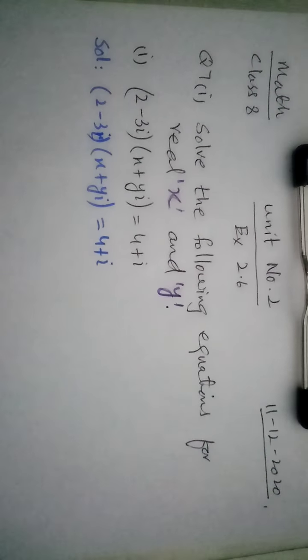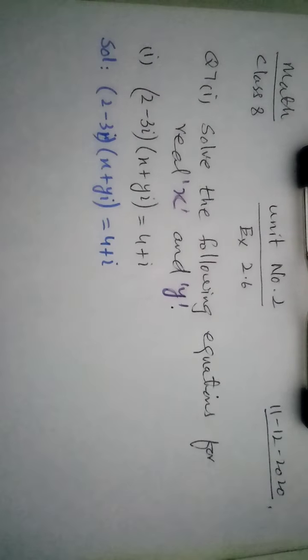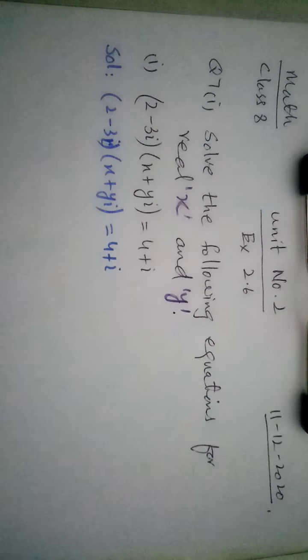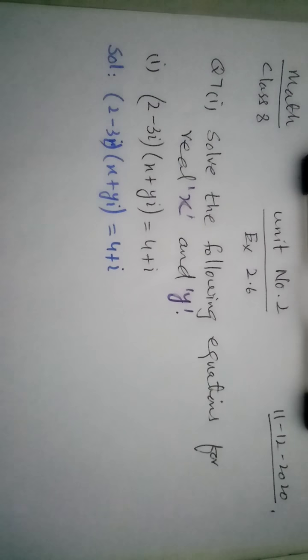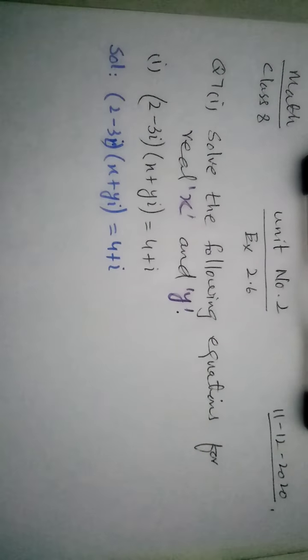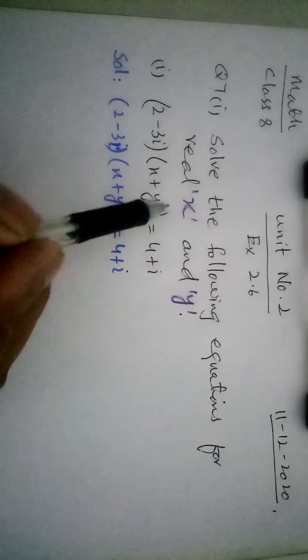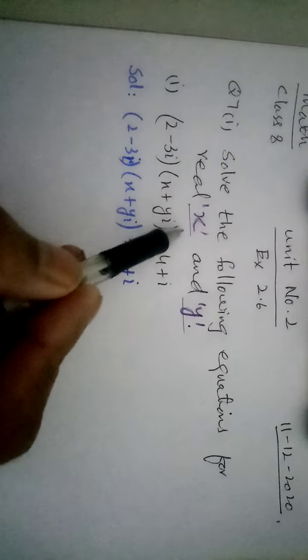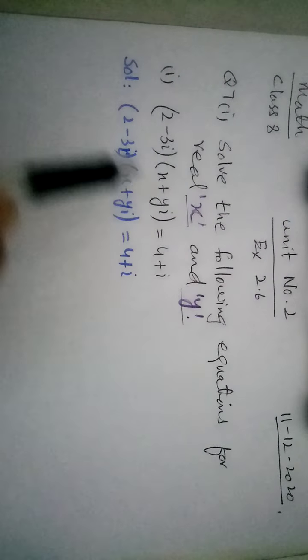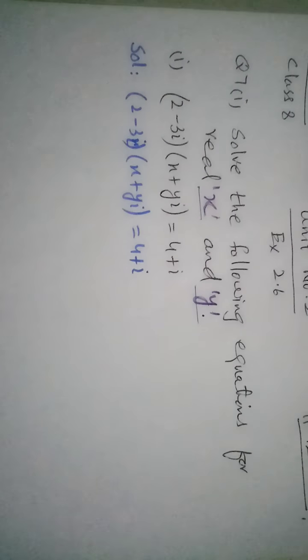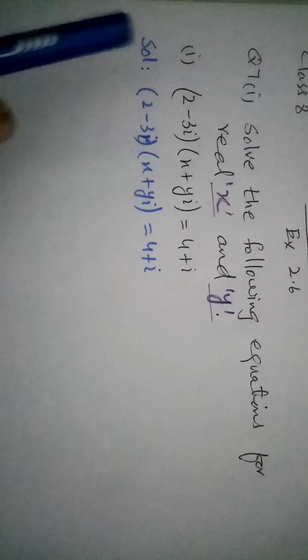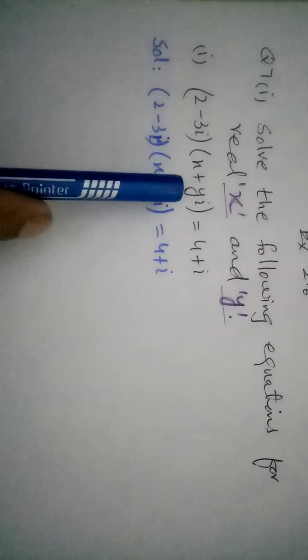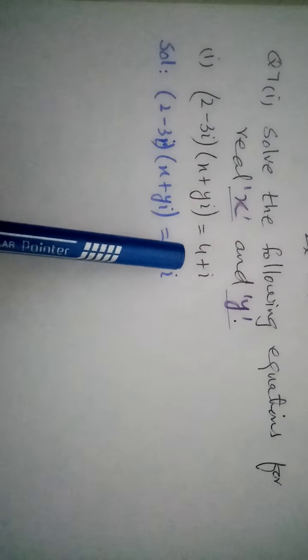Good morning class 8. Now today from unit number 2, exercise 2.6, question number 7. Solve the following equations for real x and y. We have to find the value of x and y from the given equation, and the equations are 2 minus 3 iota into x plus y iota is equal to 4 plus iota.